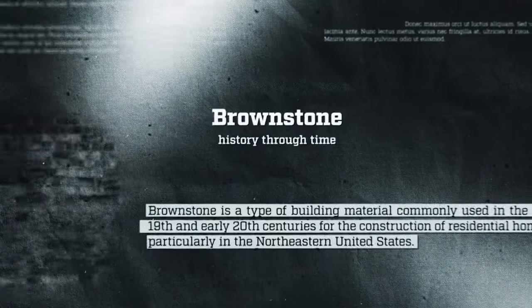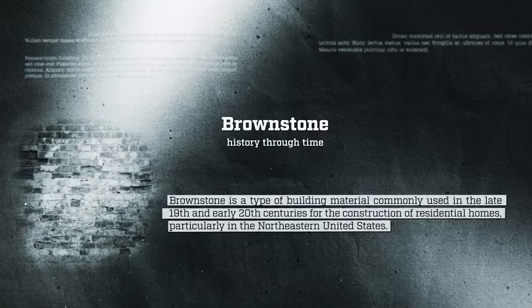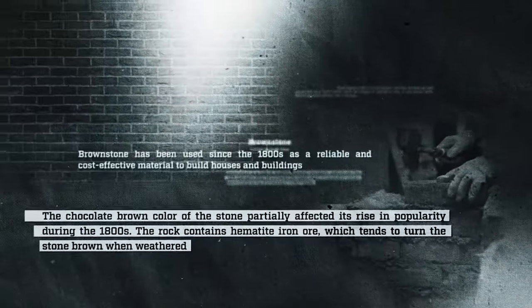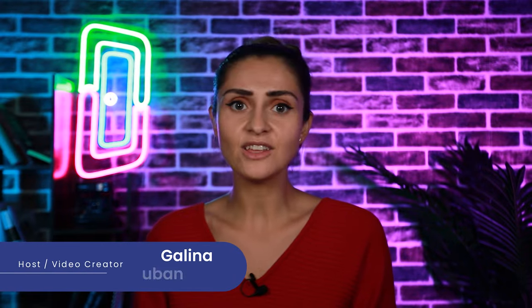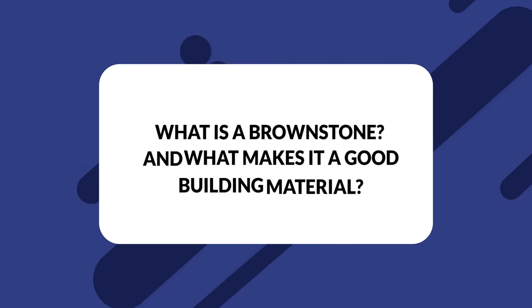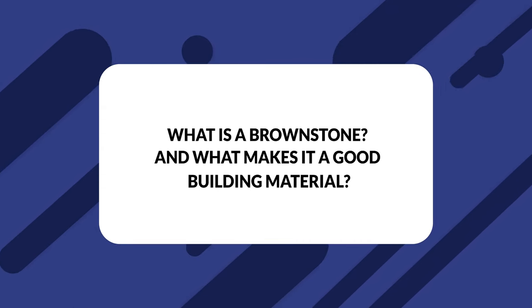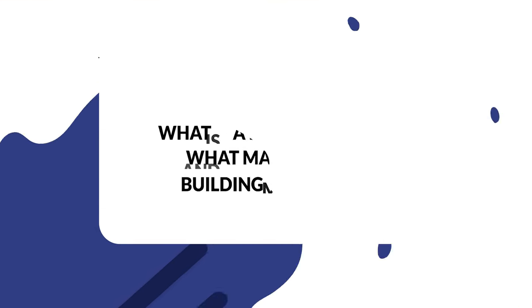Ever wondered what a brownstone is? Brownstone is a type of building material commonly used in the late 19th and 20th centuries for the construction of residential homes, particularly in the northeastern United States. In this video, I will discuss more about what a brownstone is, how it is used in the building trade, and why it changes color when exposed to the sun.